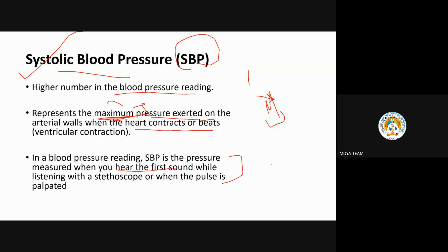When we use the sphygmomanometer manually, we put the stethoscope in our ears to hear the sounds while the mercury goes up and down. When you first hear a sound while listening with the stethoscope — that is your systolic blood pressure, i.e., the upper number.